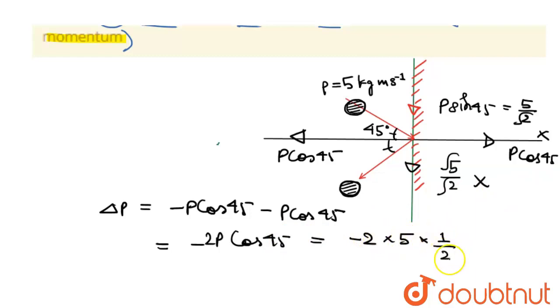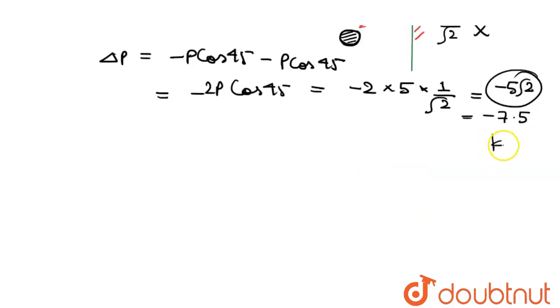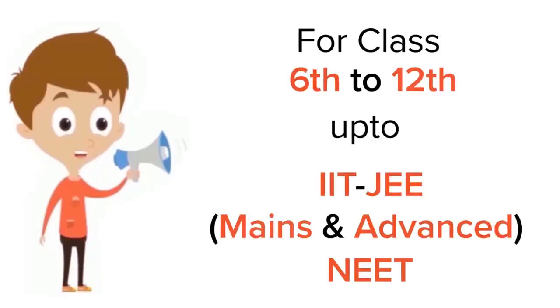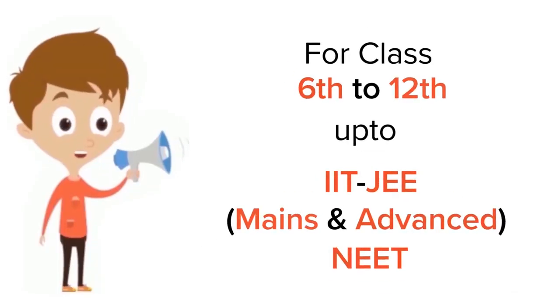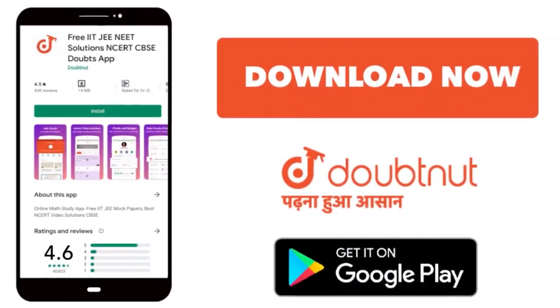Divided by root 2, so this will come as minus 5 into root 2, that is almost minus 7.5 kg meter per second. This is the change in momentum. So this will be our final answer. For class 6 to 12, IIT-JEE and NEET level, trusted by more than 5 crore students, download Doubtnet app today.